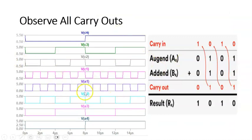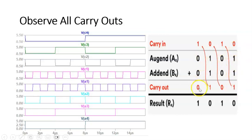If you observe all carry outputs, an interesting thing you will notice: C1 carry has the same frequency as A1, C2 is similar to A2, C3 to A3, and C4 to A4. Why is this happening? Because I am taking the same numbers. For example, 0101 plus 0101 — whenever 1 plus 1 occurs a carry is always generated, giving a carryout pattern of 0, 1, 0, 1 — the same frequency as the input. Therefore you will find the same frequency on the carry outputs. Thank you very much. In the next video I will show you the demonstration.